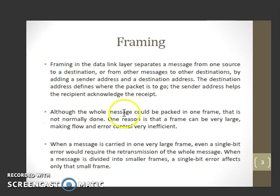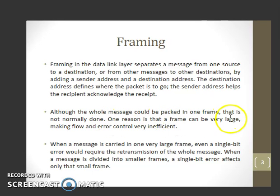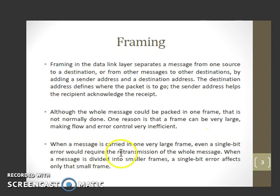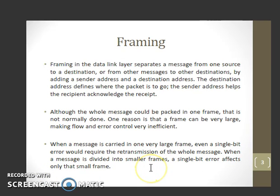Although the whole message could be packed in one frame, that is not normally done. One reason is that a frame can be very large, making flow and error control very inefficient. When a message is carried in one very large frame, even a single bit error would require retransmission of the whole message. When a message is divided into smaller frames, a single bit error affects only the small frame.